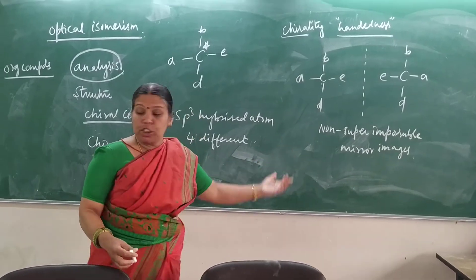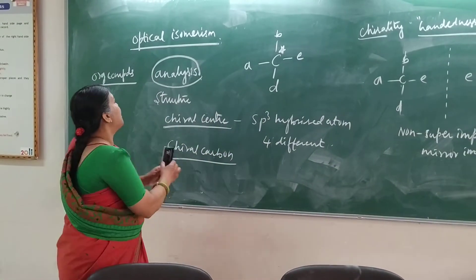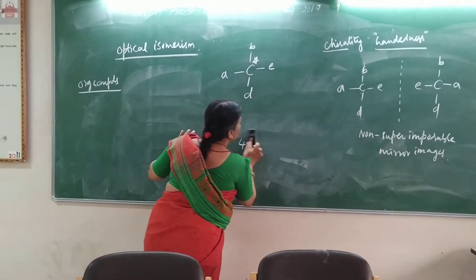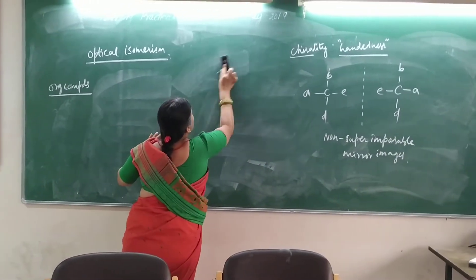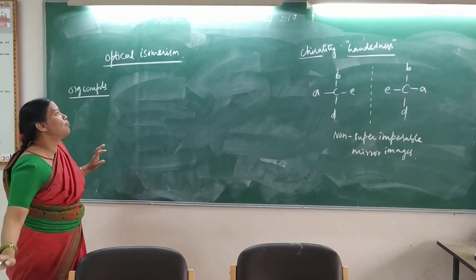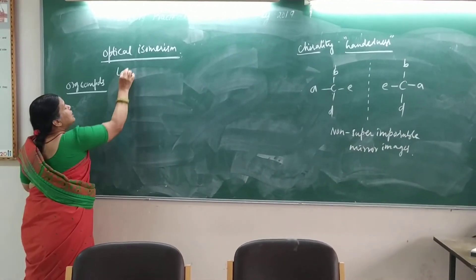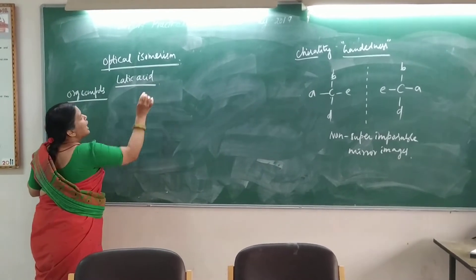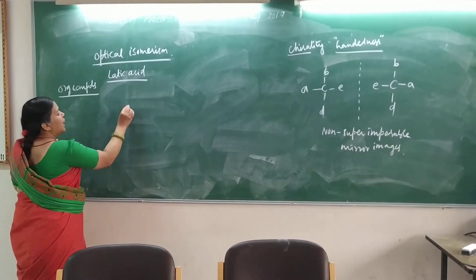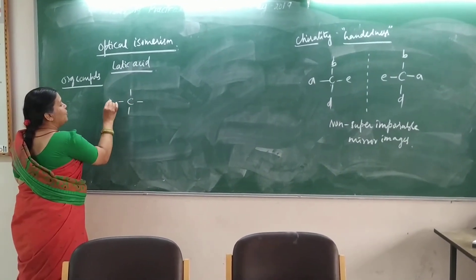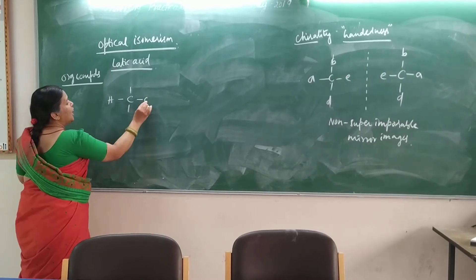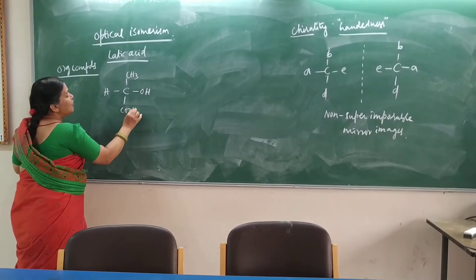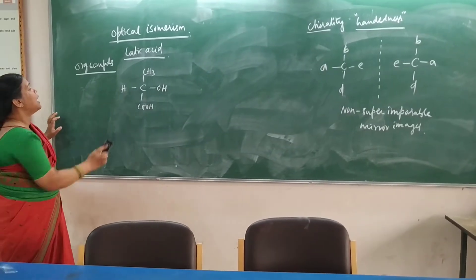These are very important conditions. The first example is lactic acid. Lactic acid has a chiral center — that is the structure. So I am going to call this organic compound optically active.